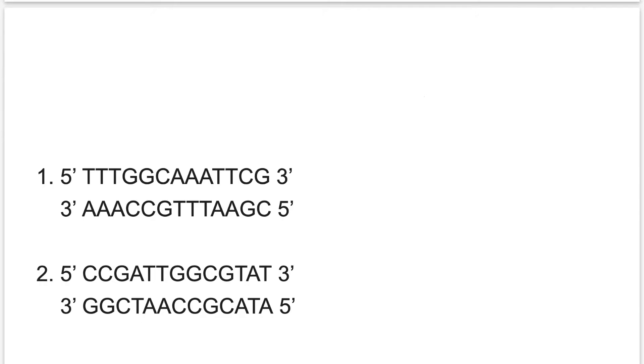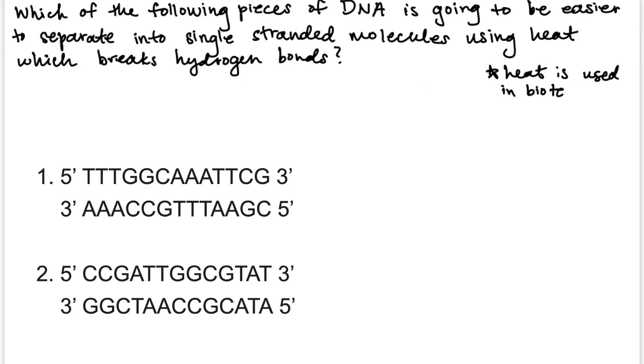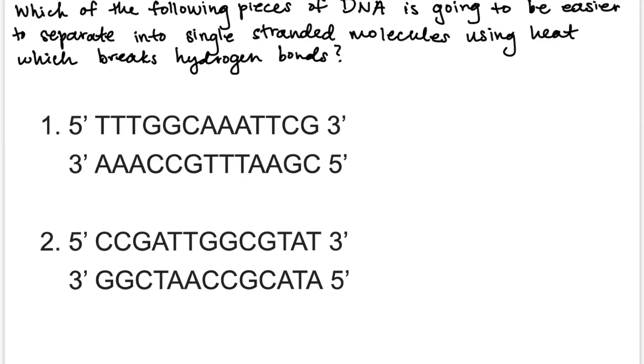We can use this information to solve the following practice problem, which states: which of the following pieces of DNA is going to be easier to separate into single-stranded molecules using heat, which breaks hydrogen bonds? A note here is that heat is often used in different biotechnologies such as PCR and sequencing to break hydrogen bonds instead of an enzyme such as helicase. We can figure this problem out by simply counting the number of AT pairs and the number of GC pairs.